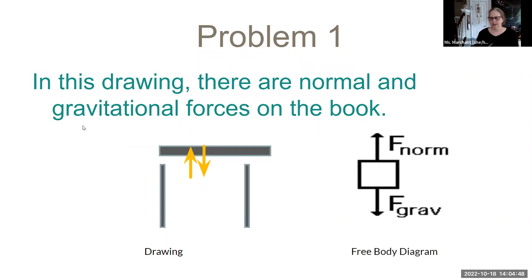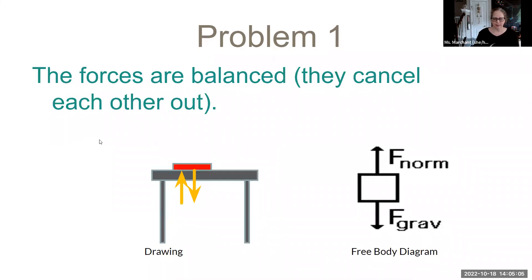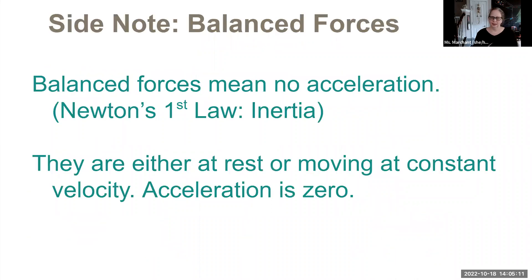It would look like that on the right — equal and opposite arrows. Label your forces. Don't just have the arrows without saying which one's the normal force and which one's gravity. Those forces balance each other out. Balance forces means no acceleration. So technically that book could have been sliding along the table and not accelerating, and then your net force would have been zero still in the X, even though it's moving. Acceleration is zero when you're at rest or moving at constant velocity.